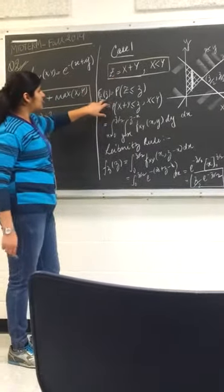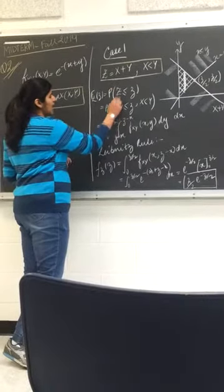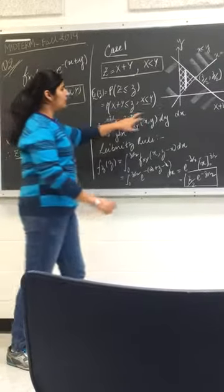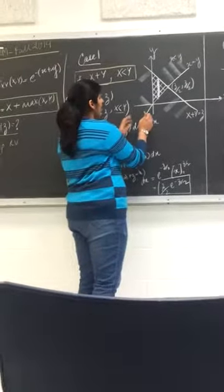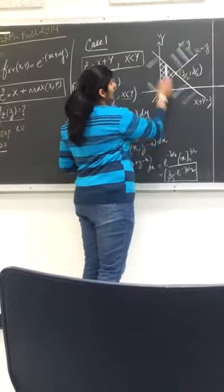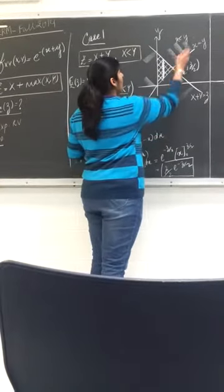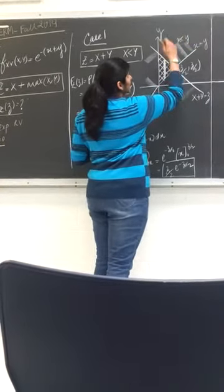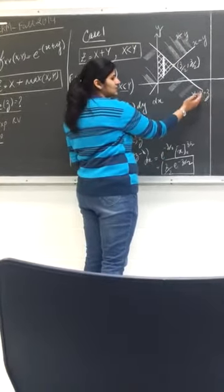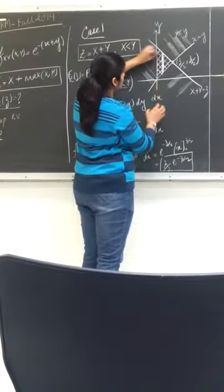We find F_Z of z, the CDF, which is the probability of Z less than or equal to z, where Z is x plus y, which is less than or equal to z, and the case is that x is less than y. Now we will plot the graph. We first draw the x equals y line, then we plot the x plus y equals z line. We want the region where x is less than y, and also where x plus y is less than or equal to z. The intersection of these two regions gives our integration region.